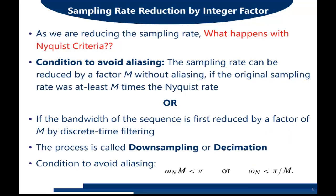Now one of the most important concerns in decimation is the verification of the Nyquist criteria. The main point is we are going to reduce the sampling frequency, and the Nyquist criteria states that the sampling frequency must be at least greater than two times the maximum frequency of the continuous time signal. So whenever we reduce the sampling frequency, it may happen that we reduce it to such an extent that the Nyquist criteria is no longer met, and then aliasing will occur.